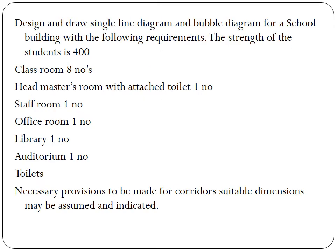Here the problem asks us to design and draw a line diagram and bubble diagram for a school building with the following requirements. The strength of students is 400. Requirements include a headmaster's room with attached toilet, one staff room, one office room, one library, one auditorium, and toilets. Necessary provisions are to be made for corridors, and suitable dimensions may be assumed and indicated.